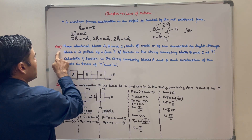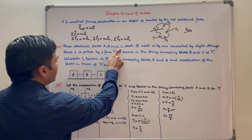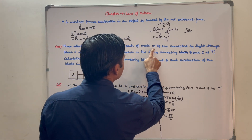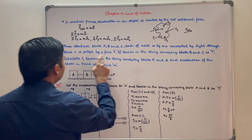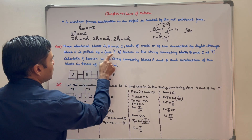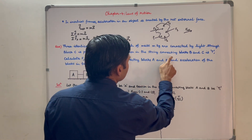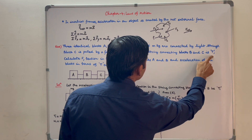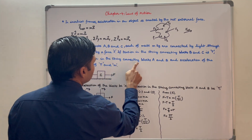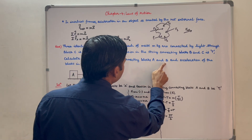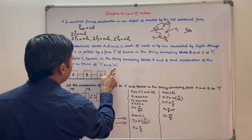Now let us see this question. Three identical blocks A, B, and C, each of mass m kg, are connected by light strings. Block C is pulled by a force F. If tension in the string connecting blocks B and C is T, calculate F, tension in the string connecting blocks A and B, and acceleration of the blocks in terms of T and M.